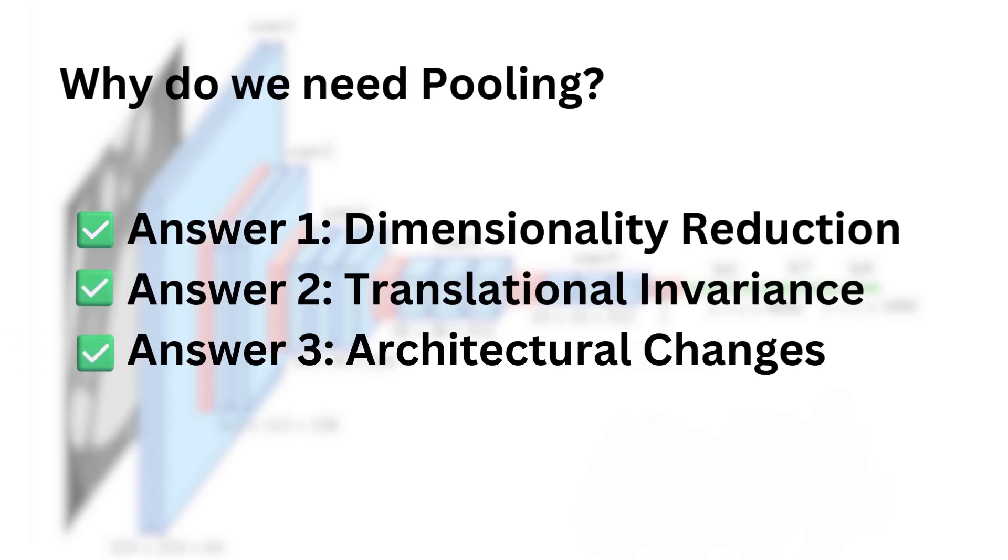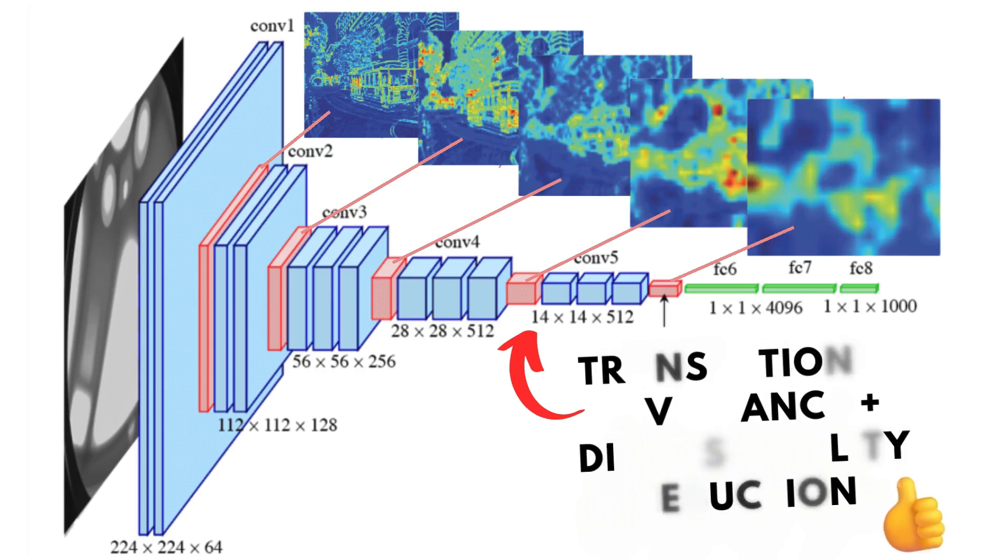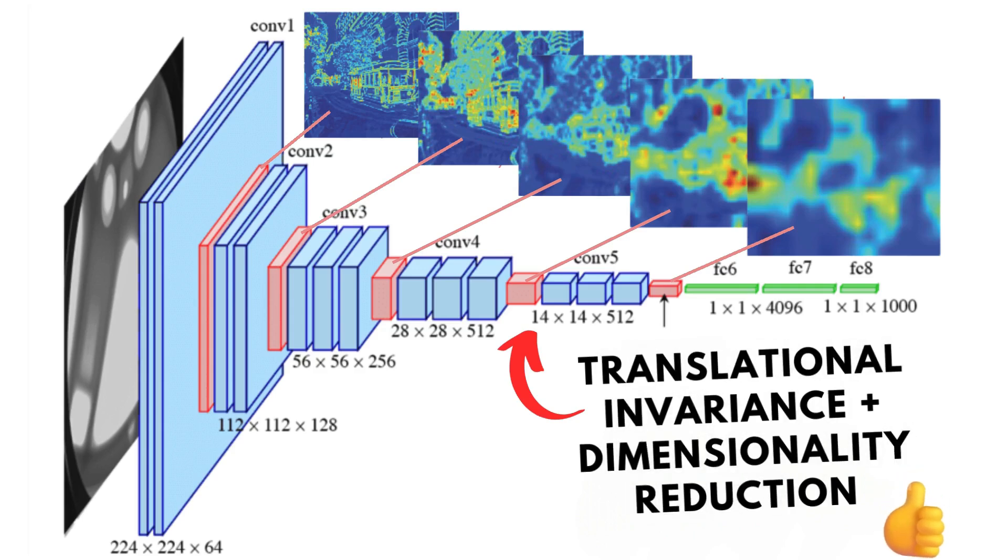And that's it. That's the three main reasons why pooling is so useful in convolutional neural networks. I hope this was useful. Don't forget to like the video if it was the case and leave a comment if you have any questions. I'm here to help. Have a great week, everyone, and see you in the next video.